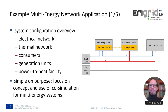Let's start with the application itself. We have a system configuration that comprises an electrical and a thermal network, some consumers and generation units, and a power-to-heat facility. This setup is simple on purpose, in order to focus on the concept and use of co-simulation for multi-energy systems. However, when we run the demo, you will see that some of the interactions are actually quite complex.